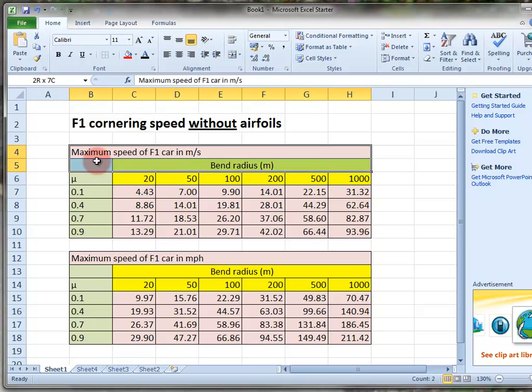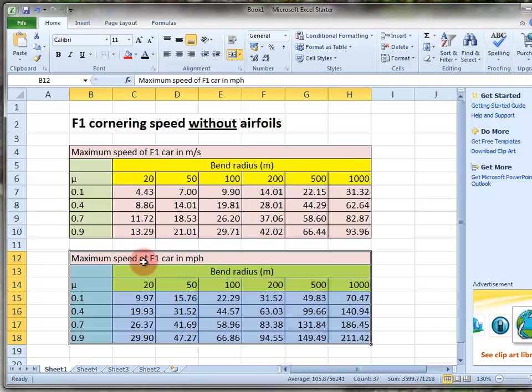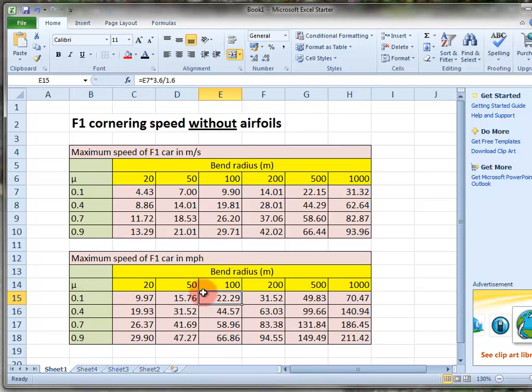The first table is in meters per second and the second table is the same thing but in miles per hour. On the left-hand side, we've got mu which is the coefficient of friction between the tires and the road surface going from 0.1 to 0.9. Both tables are identical.